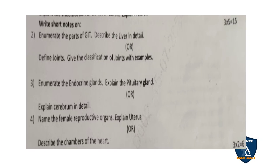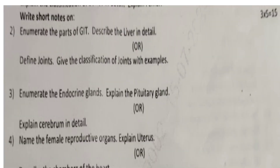Next, we will move on to short notes. Under short notes, you have to answer 3 questions — 3 into 5, that is 15 marks. These are internal choice questions. In question 2, you have 2 options; answer any 1. Question 2: Enumerate the parts of the gastrointestinal tract and describe the liver in detail, OR define joints and give the classification of joints with examples.